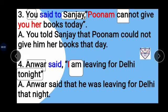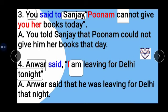Example 3: You said to Sanjay, 'Punam cannot give you her books today.' Sanjay is the object, so 'said to' changes to 'told' and conjunction 'that' is added. 'Can' changes to 'could,' 'you' changes to 'him,' 'her' remains as it is, and 'today' changes to 'that day.' Answer: You told Sanjay that Punam could not give him her books that day.